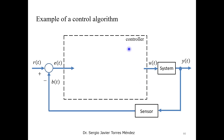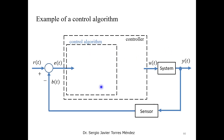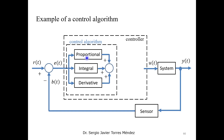Focusing on the controller block, we have additional important elements called control algorithms, which include the formula or control law that generates a signal to a driver affecting the actuator. For example, the proportional-integral-derivative (PID) control law uses the error input to generate a signal to the driver, which in turn generates the final signal to the actuator.